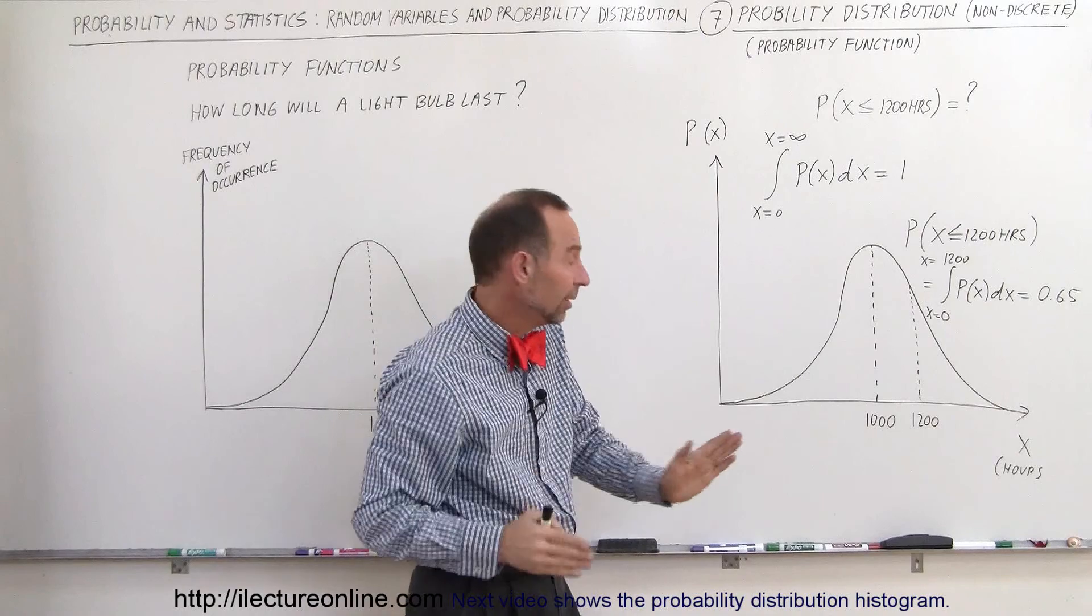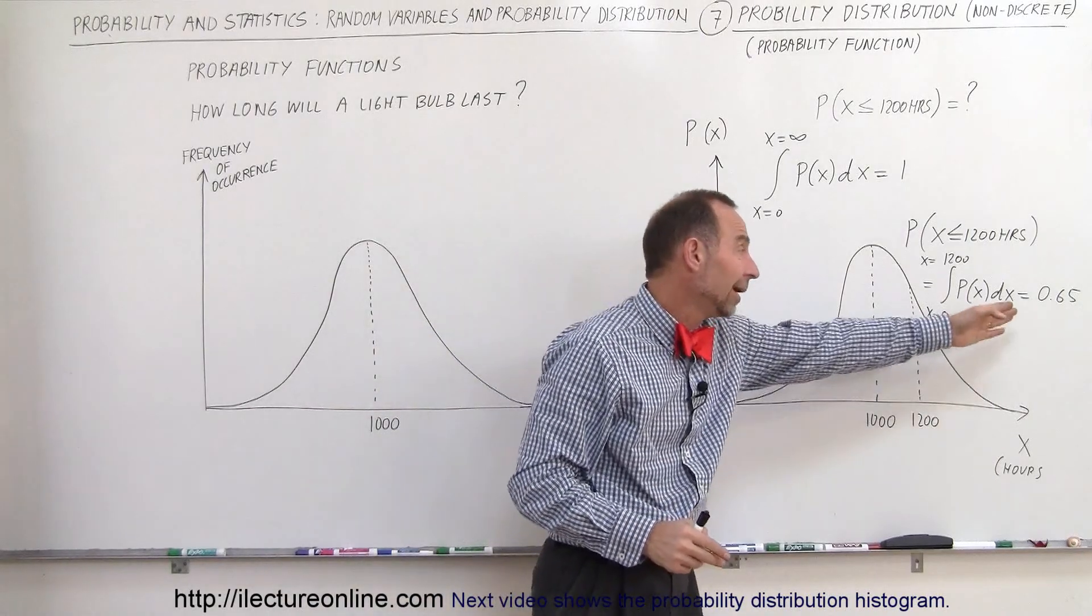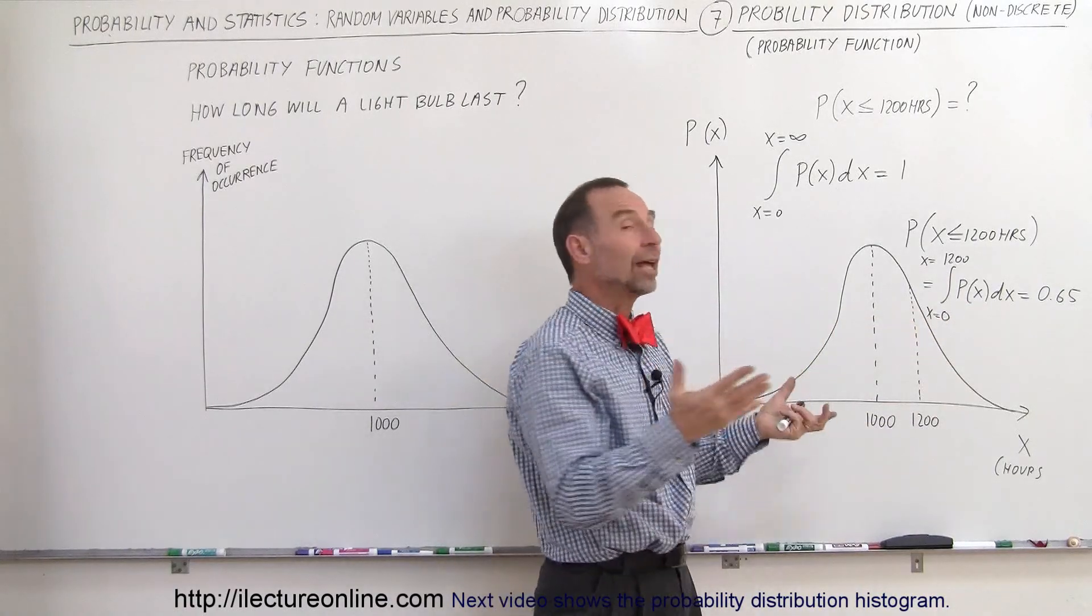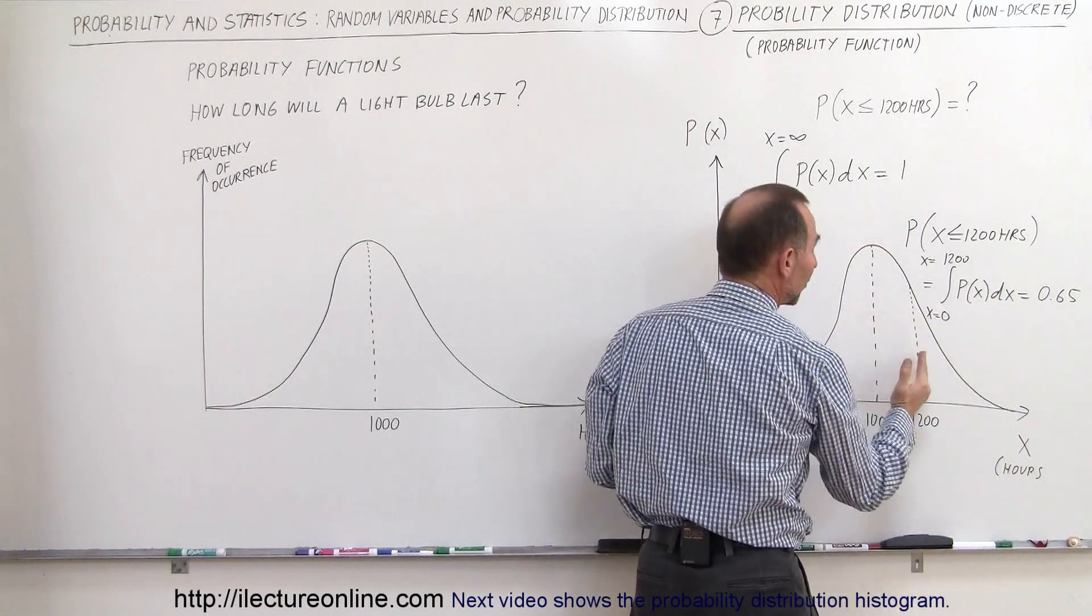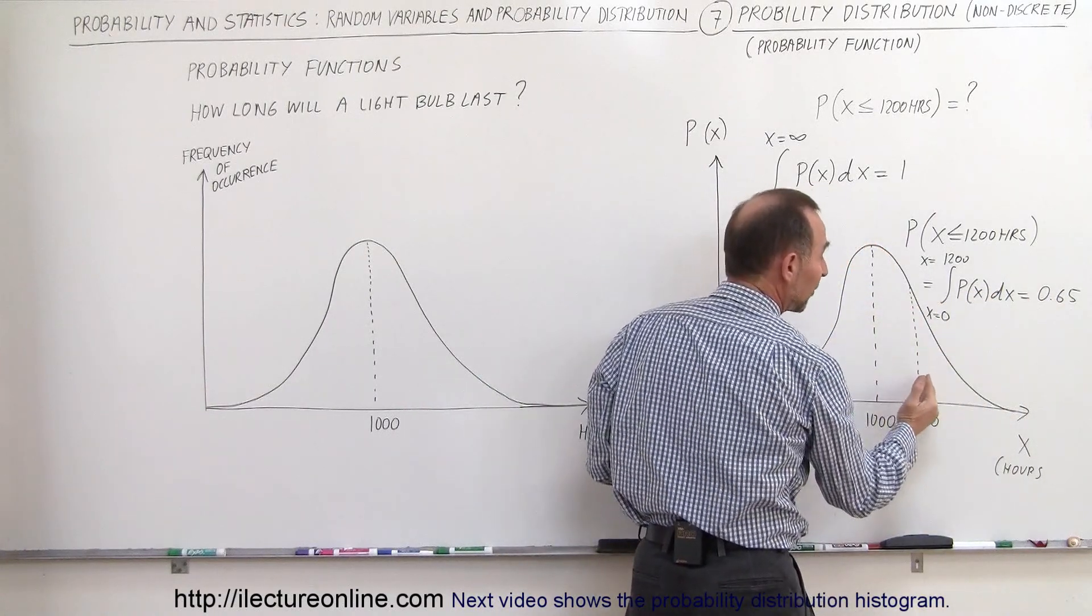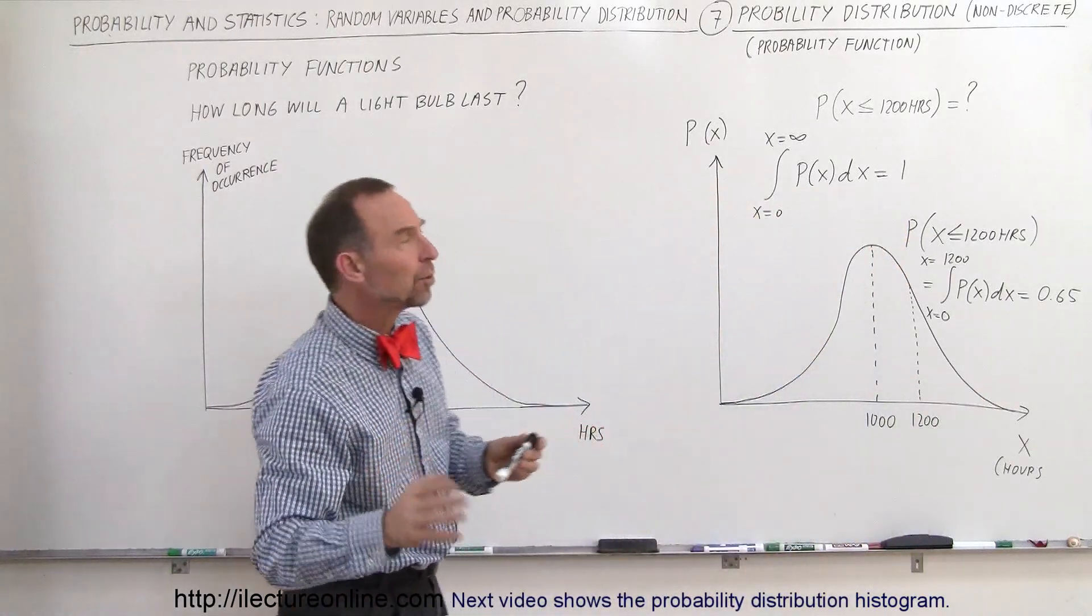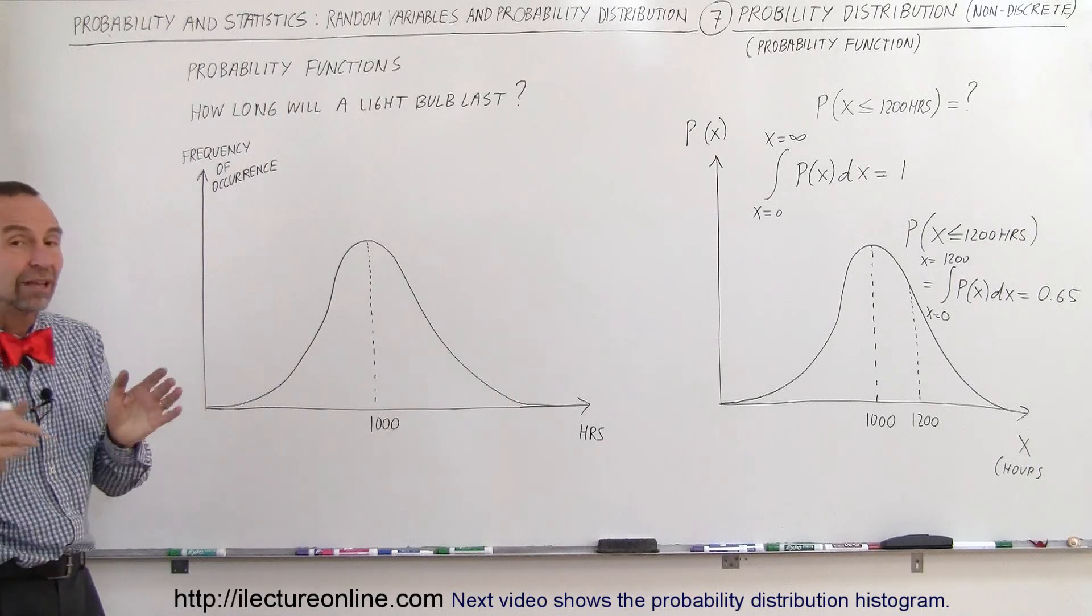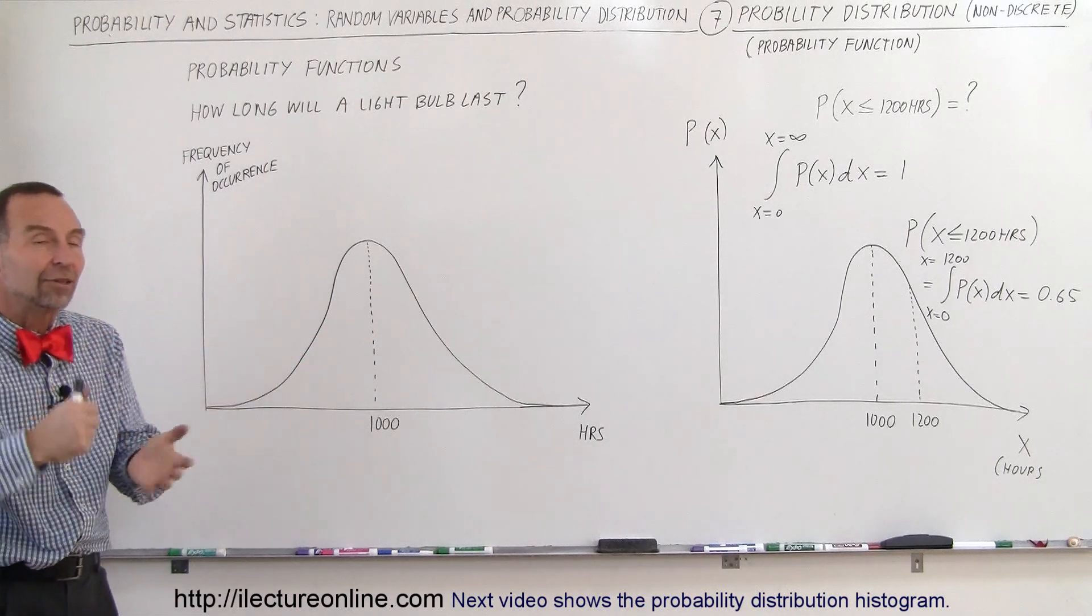And that would be equal to let's say maybe 0.65 or so. In other words you'd come up with a number between 0 and 1, probably more than 50 percent but somewhere between 0 and 1. And in this example 0.65, that means that of all the light bulbs you would expect 65 percent of them to last 1200 hours or less, and then 35 percent would last 1200 hours or more as an example. And that's what we do with these non-discrete type of probability functions. So that's the difference between discrete and non-discrete or discrete and continuous.